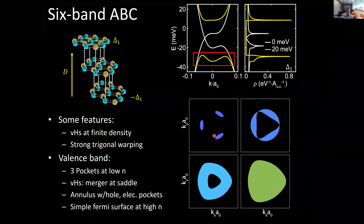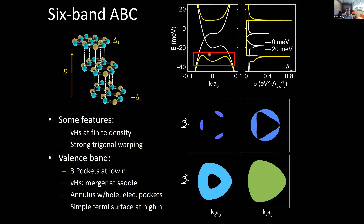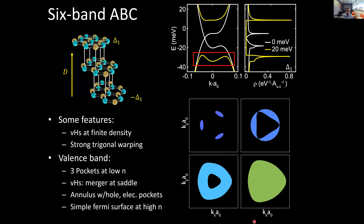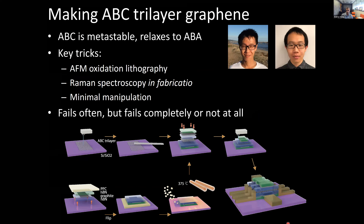This is a system where you have rather large divergences, including one at rather finite density for holes. You can now try to play with what happens as you dope it, since you have electrostatic control. Looking at the Fermi contours, especially for holes: as you dope the system, you start off with three Fermi pockets. Those pockets merge at a saddle point where you get divergent density of states. Then you have an annular Fermi sea, and as you keep doping further from neutrality, that annulus disappears and you have a single simply connected Fermi contour.